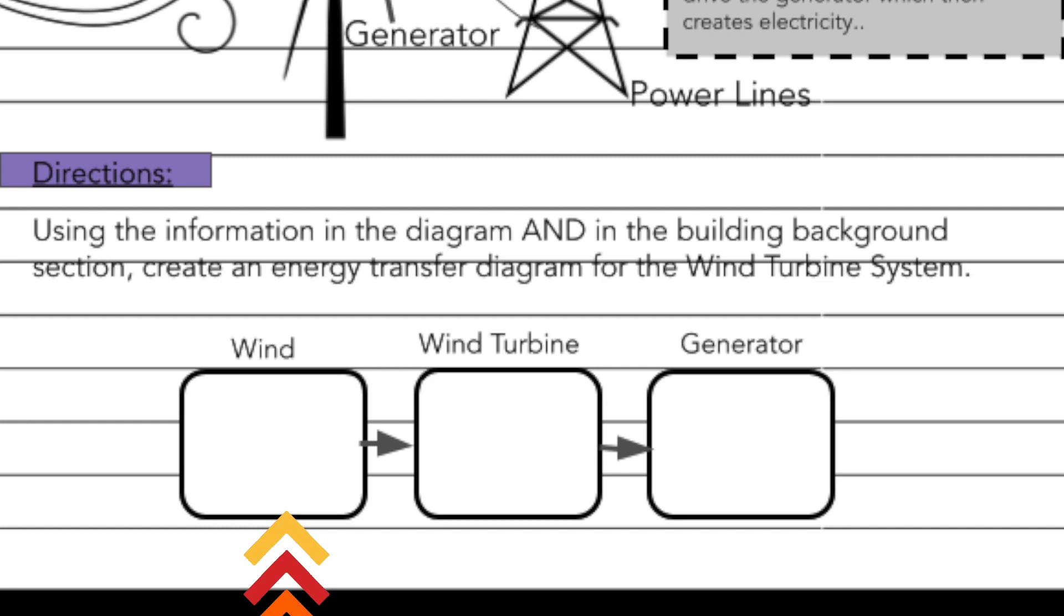Go ahead and consider what kind of energy wind represents, what kind of energy the movement of the turbine represents, and then finally what kind of energy is created by the generator, and list them in these three boxes. Then you'll have a better diagram of the energy transfer.